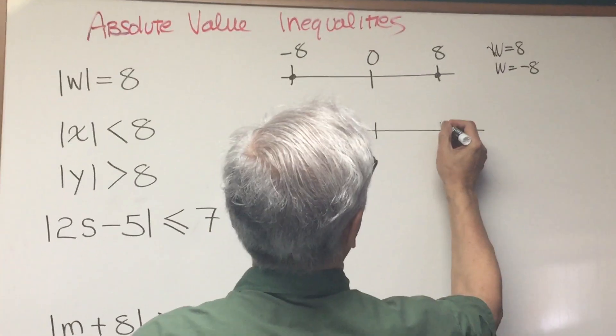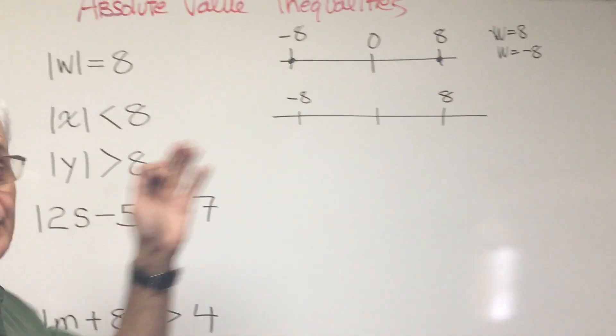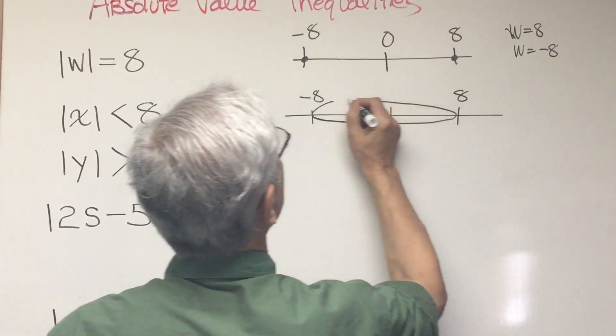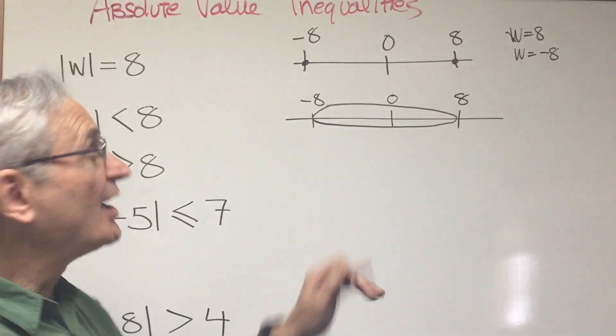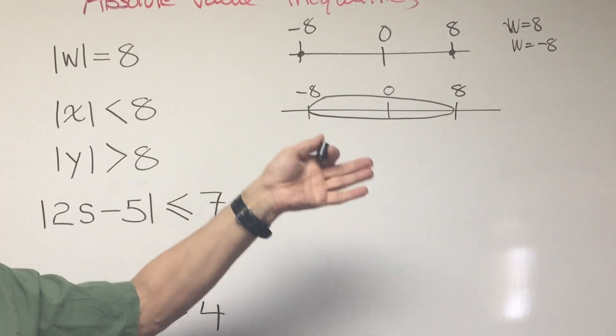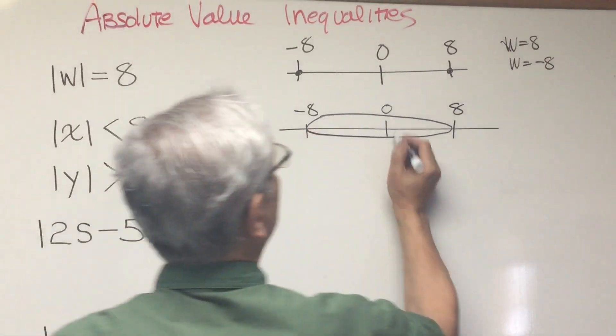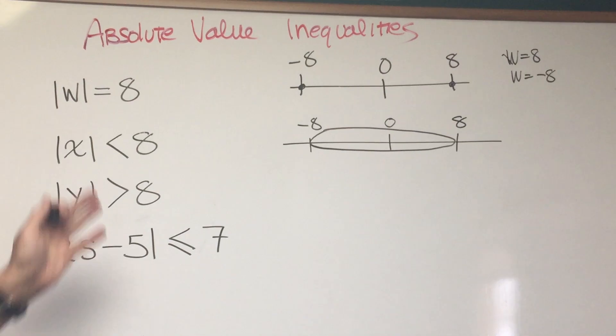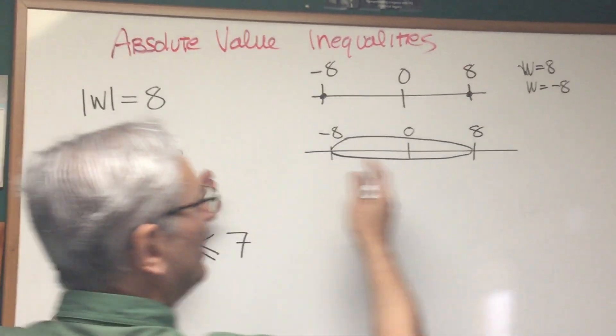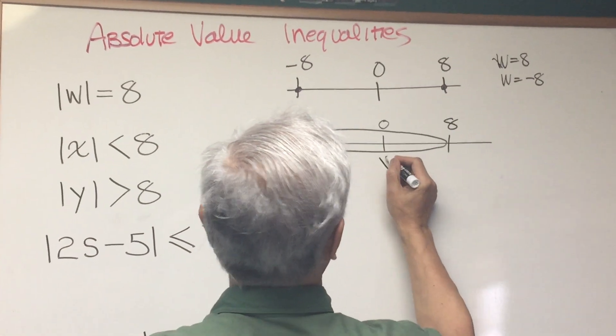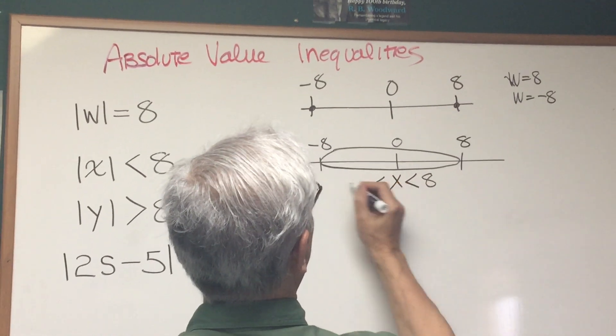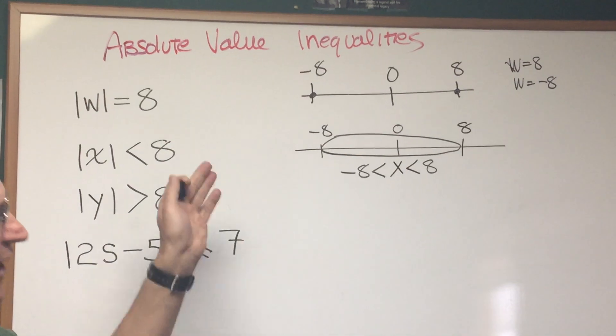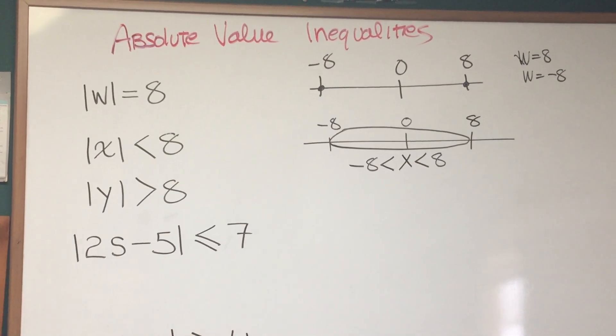We're looking from negative 8 to positive 8. If the distance is less than 8, that means we're looking at the range of numbers that's within that circle, between negative 8 and positive 8, because that's where the distance is less than 8. What's the solution to this? Here is our solution set. x is less than 8 and greater than negative 8. Any number within that circle, within that range, is going to satisfy the inequality.